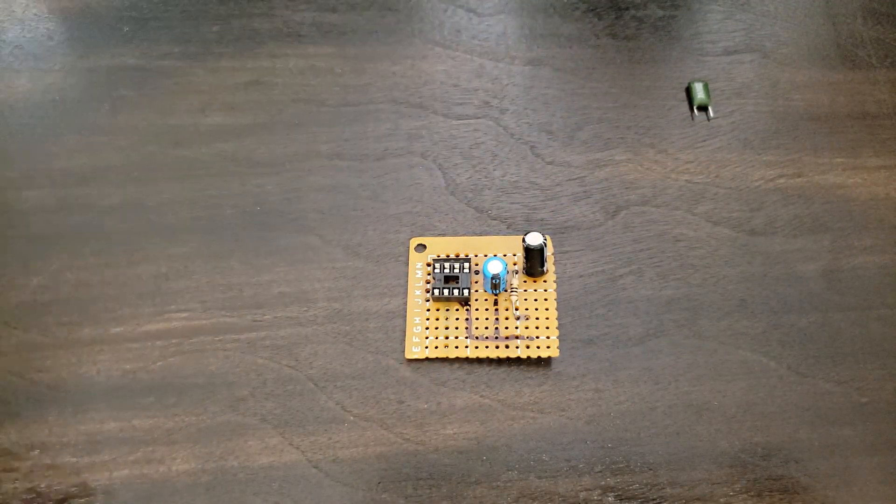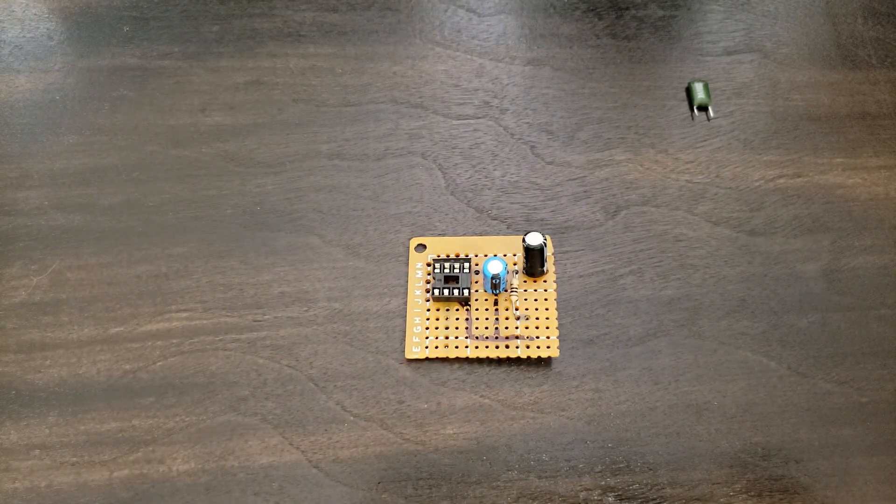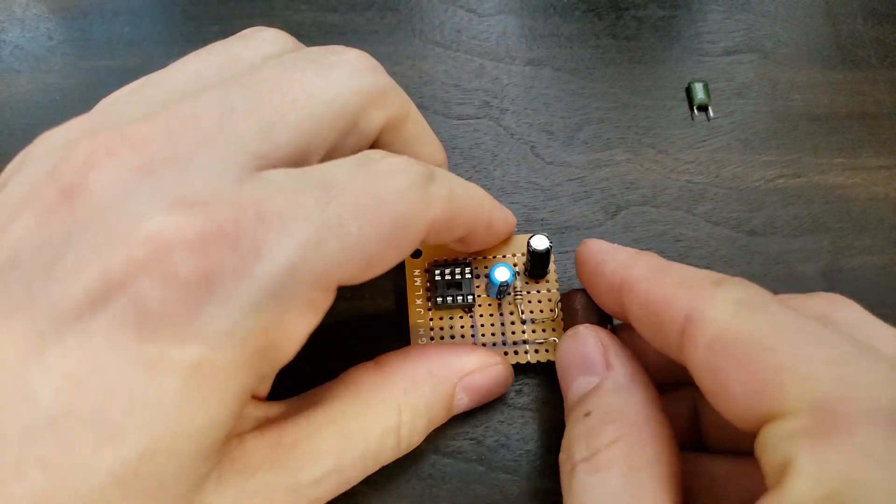Add the larger film cap and the input cap and solder all the parts in place, making connections between pins where necessary.